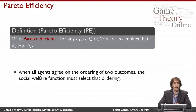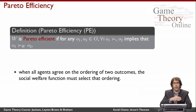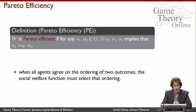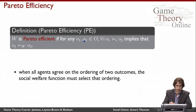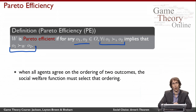Now let me formally state the conditions that Arrow's theorem speaks about. The first is Pareto efficiency. The idea is that when everybody agrees on how two outcomes should be ranked — if every agent thinks A is better than B — then the social welfare function is required also to output that A is better than B. This is only the case when everybody is unanimous; if even one person feels differently, this doesn't restrict us at all. Formally, W is Pareto efficient if for any pair of outcomes O1 and O2, if for all agents i, outcome O1 is preferred to O2, then the social welfare function must also choose O1 preferred to O2.